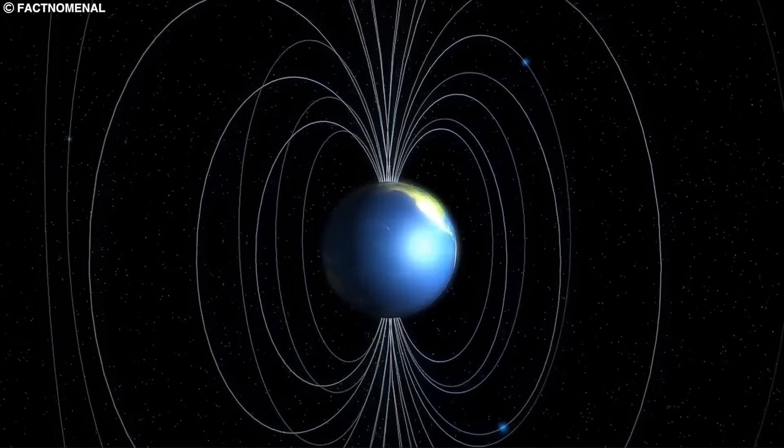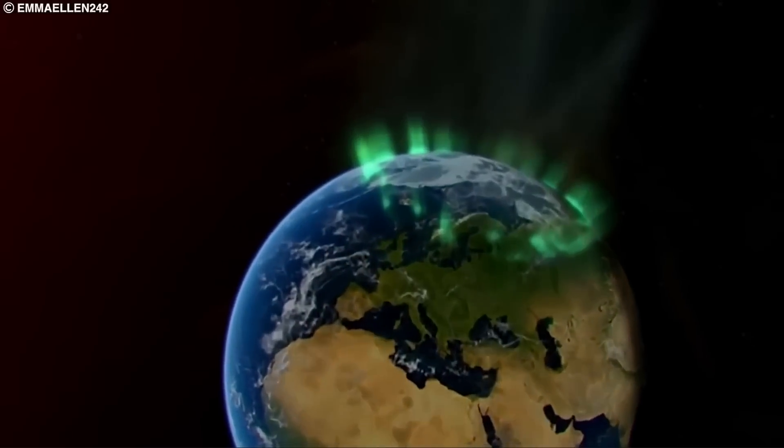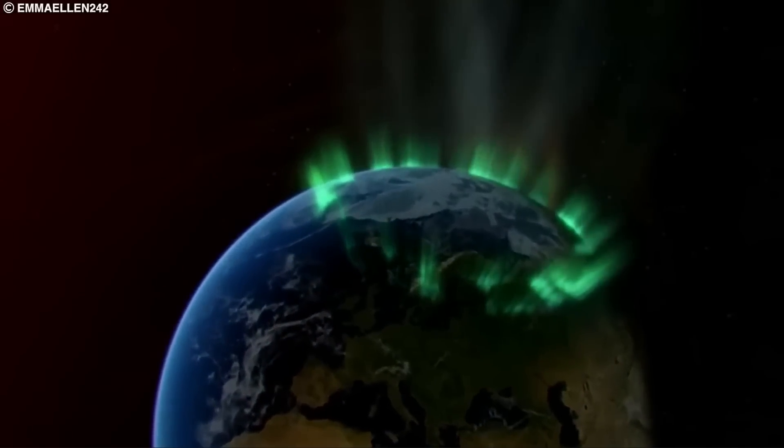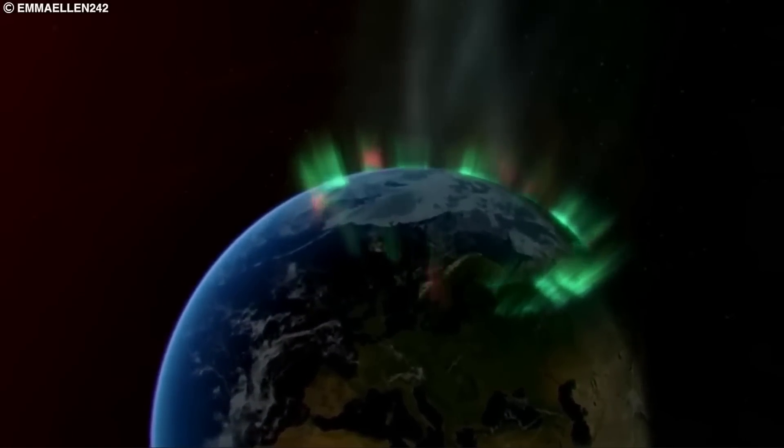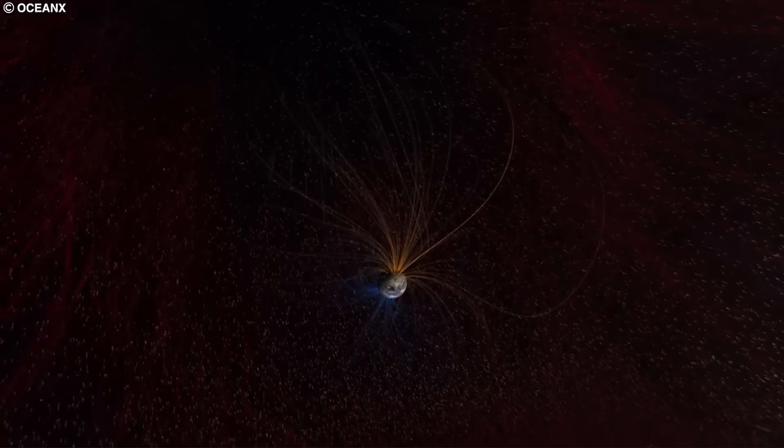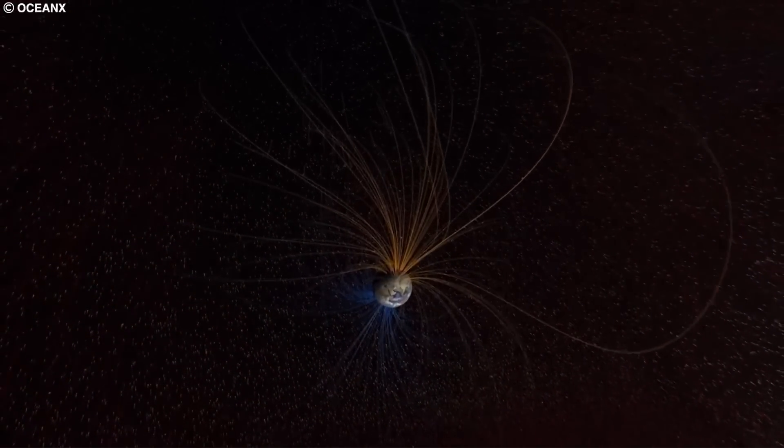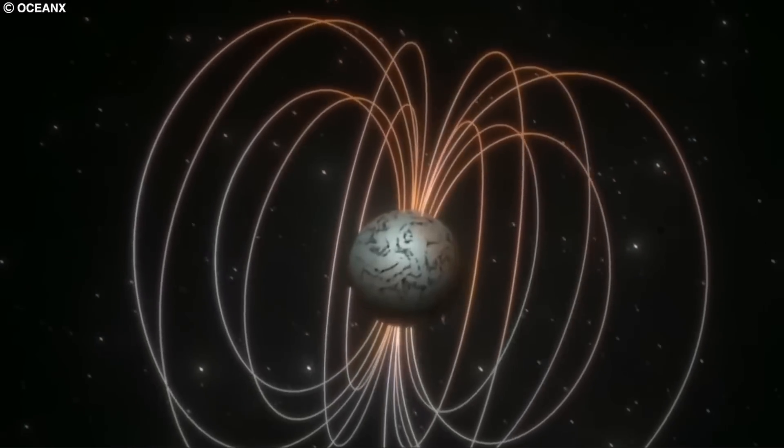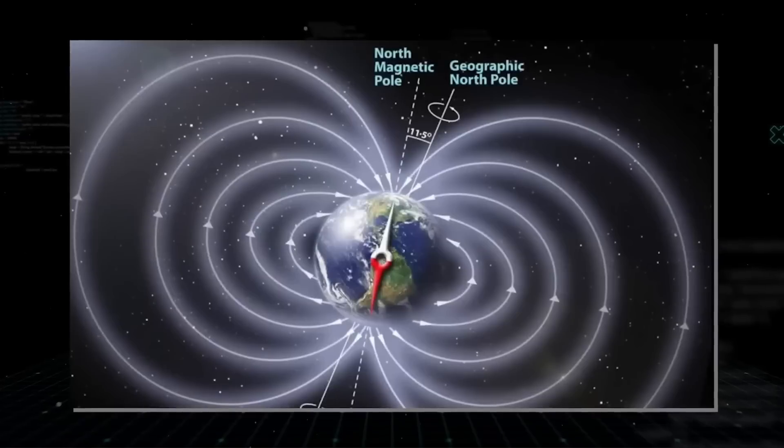The North Magnetic Pole of the Earth is also rapidly moving towards Russia at a rate of more than 40 miles per year, causing scientists to wonder what is driving this unusual behavior. And yet, even with all these questions unanswered, there is evidence to suggest that the answers may be found in the phenomenon of pole shifts.